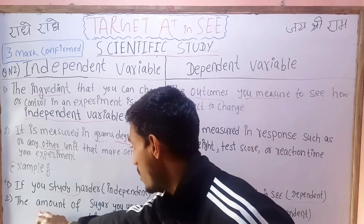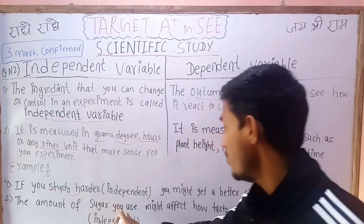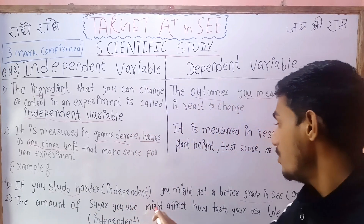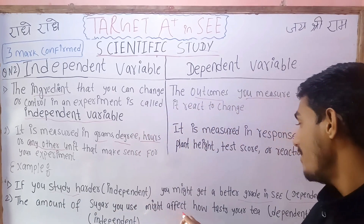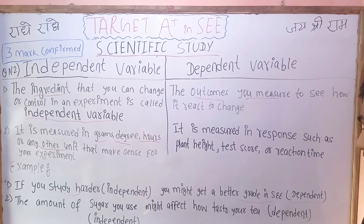Another example: the amount of sugar you use might affect how your tea tastes. The amount of sugar is the independent variable, and the taste of the tea is the dependent variable.